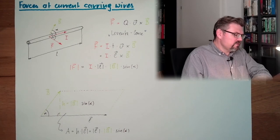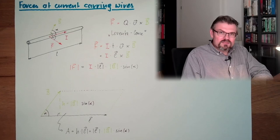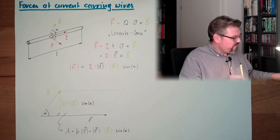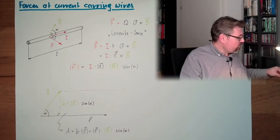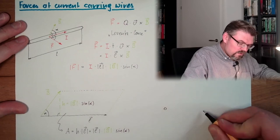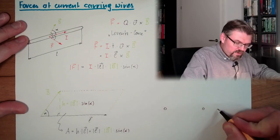So this is forces at current carrying wires. What if we don't have only one wire? What if we have more wires than one? Let's say we have here wire.